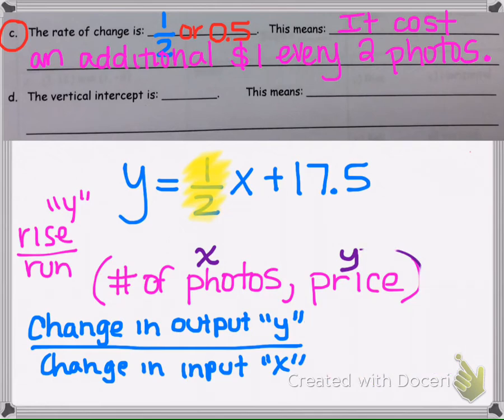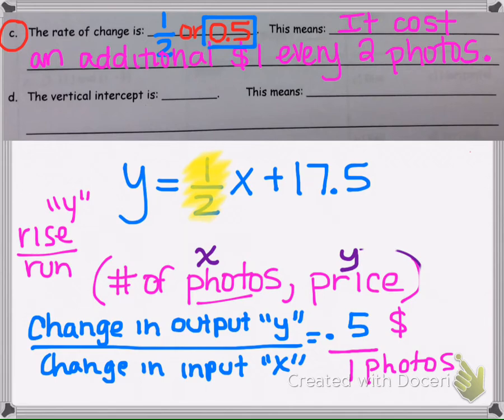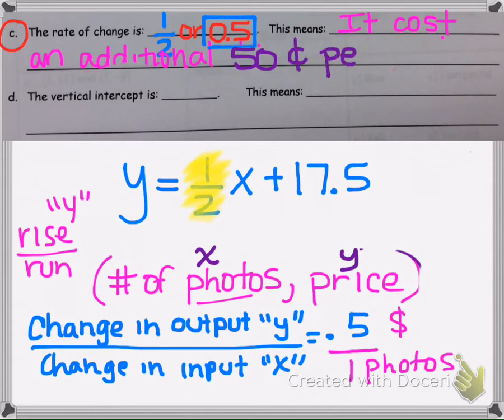Now, if you decide, instead of writing 1 half, you decide to write it as a decimal, you need to explain what the 0.5 represents. We know that rate of change is the output, change in the output over the change in the input. You could put a 1 in any denominator, okay? Here, we have the output, which is the y, so price, and the photos. We explain that as, it costs, not 0.5, it costs 50 cents for every one photo. 0.5 of a dollar, that's 50 cents. It costs 50 cents for one photo. So it costs an additional 50 cents per photo.